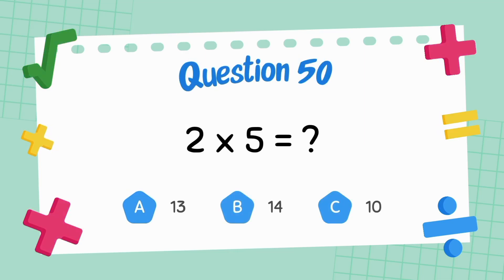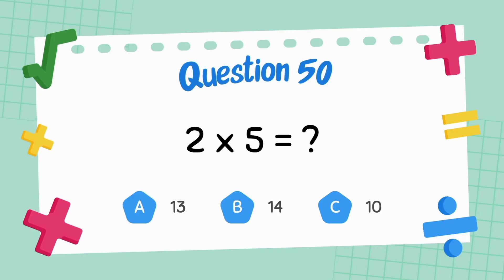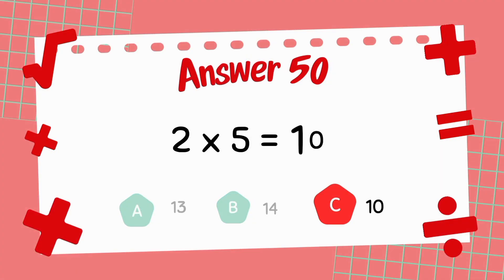What is two multiply five? The answer is ten.